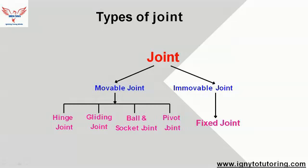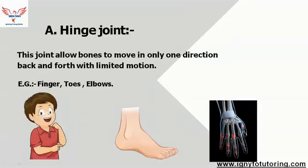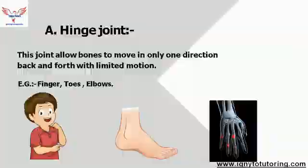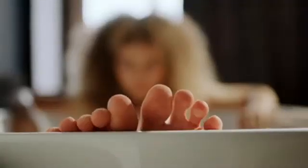Now let's start with the first: hinge joint. This joint allows bones to move in only one direction — back or forth — with limited motion. Examples of hinge joints are fingers, toes, and elbows.